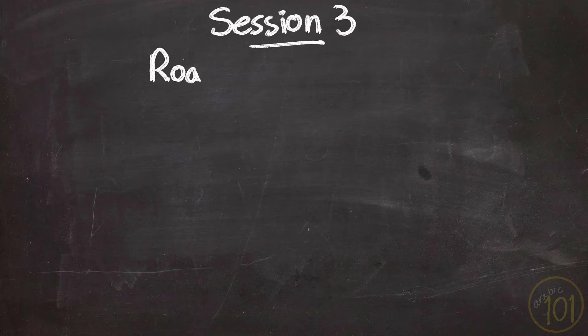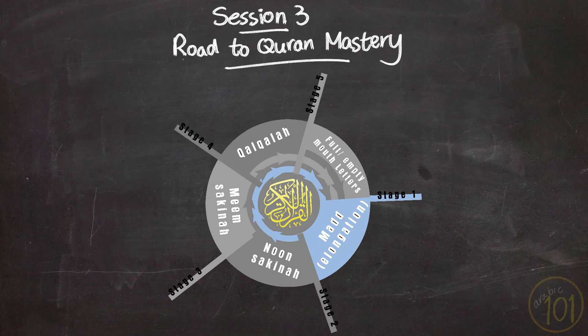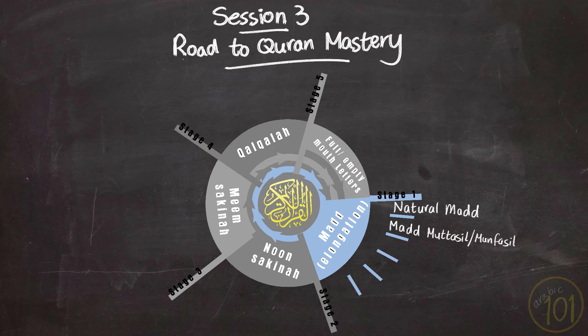This is session 3 of our Road to Quran Mastery series. So far, we've discussed two skills of Quranic Mad: Natural Mad, Mad Mutasil, and Mad Munfasil. And today, we'll talk about another skill of Mad which is strongly related to both of these two types. Today's topic is Mad As-Sila, or Linking Mad. Let's get started.